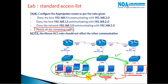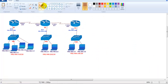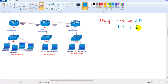Communication from the 2.x network back is also not permitted. So the rules are: deny 192.168.1.1 to 2.x, deny 1.2 to 2.x, deny the complete 3.x network to 2.x, and permit all remaining traffic.